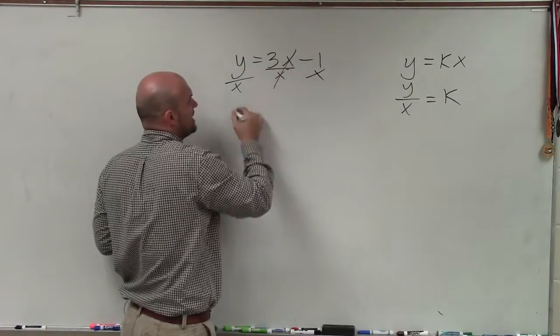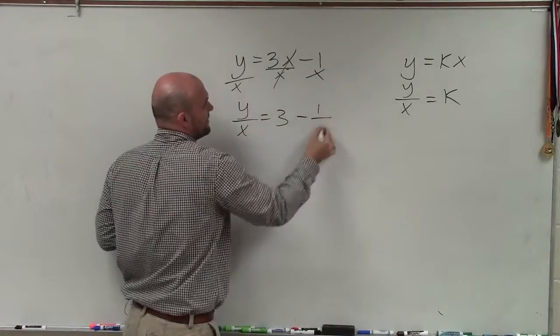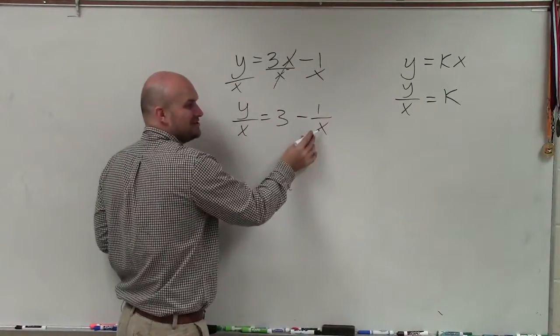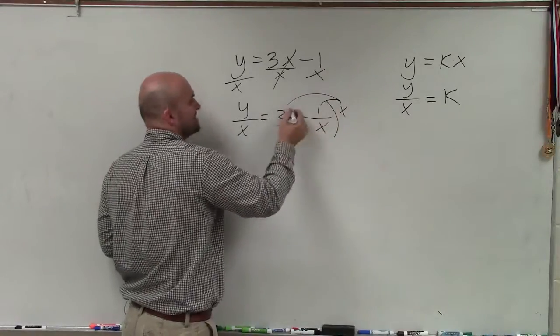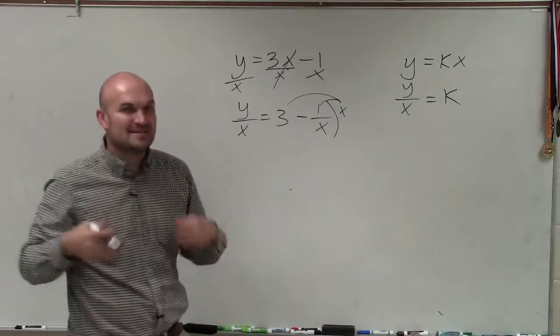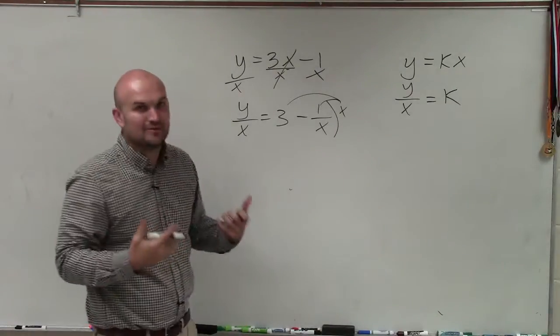So therefore, even though that gives me y over x equals 3, I still have negative 1 over x. Then to undo dividing, I'd have to multiply. But I have to multiply by both terms. So that's going to be multiplied by x. It's an ever and ever going cycle that you're never going to be able to get rid of the x.